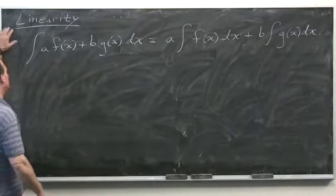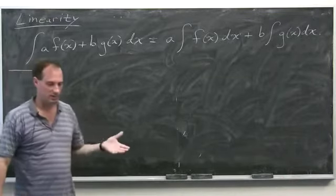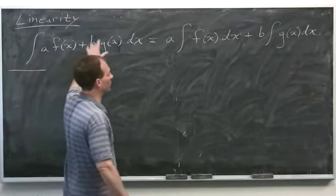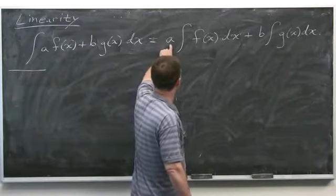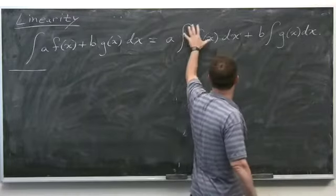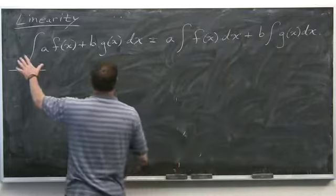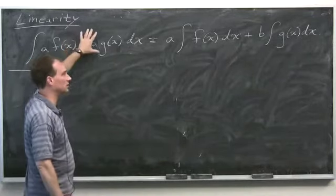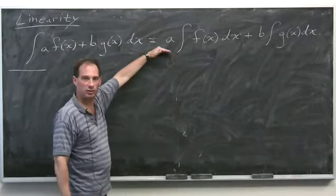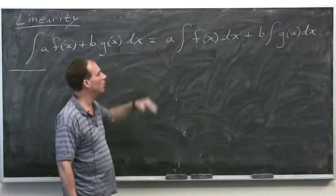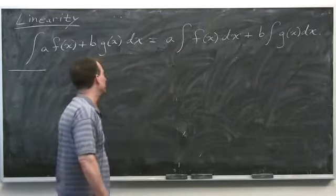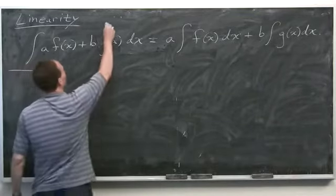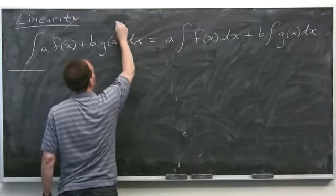If you want an anti-derivative of a times f(x) plus b times g(x), you can split up the sum and pull out the constants: you get a times the integral of f(x) dx, plus b times the integral of g(x) dx. You have to make the exception that a and b can't both be zero, or explicitly add a plus c.